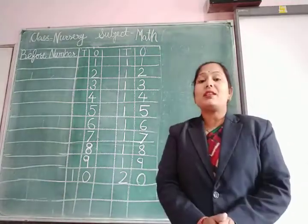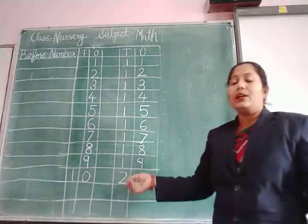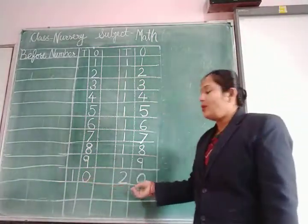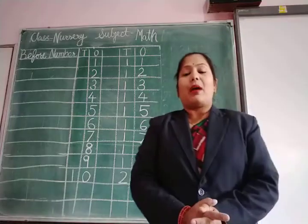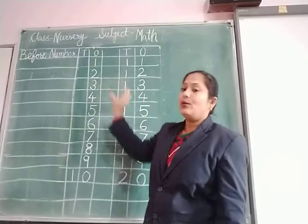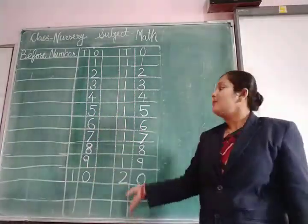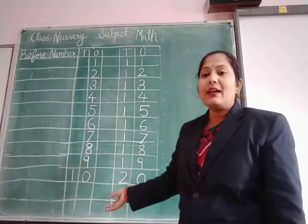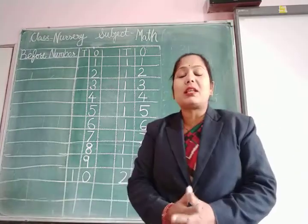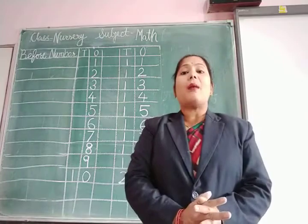So here, first I already wrote numbers 1 to 20. You have to write in your notebook. First you write numbers 1 to 20. Numbers की practice अच्छे से हो जाएगी और साथ ही आप after, before और between के concept को अच्छे से कर पाएंगे।